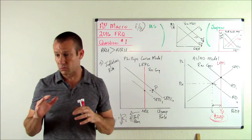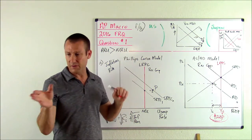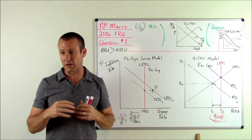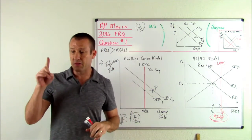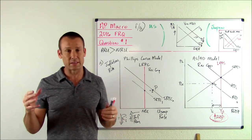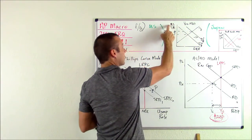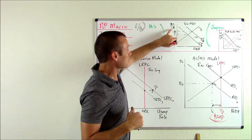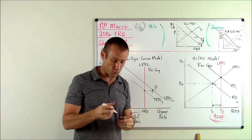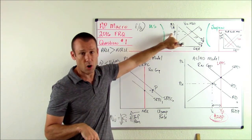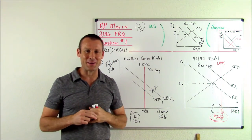Part G: draw a correctly labeled graph of the foreign exchange market for the Japanese yen showing the effect of the change in demand on the value of the yen relative to the U.S. dollar. We need more dollars to get a yen — that's what it means when we move vertically upward on this graph. The yen is appreciating. The demand for yen shifts right, and the yen appreciates relative to the U.S. dollar.